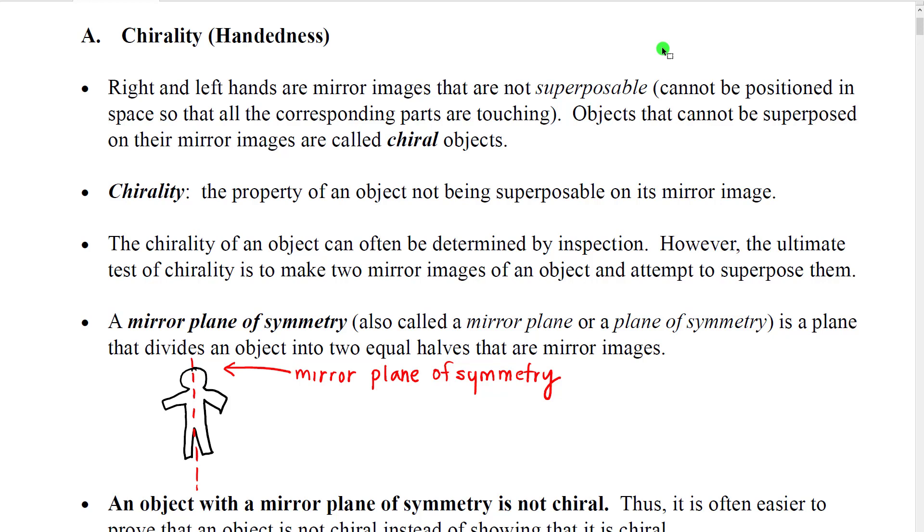They can't be positioned in space so that all of their corresponding parts are touching or aligned. Objects that can't be superposed on their mirror images are called chiral objects. And chirality is the property of being chiral, in other words, of not being superposable on a mirror image.